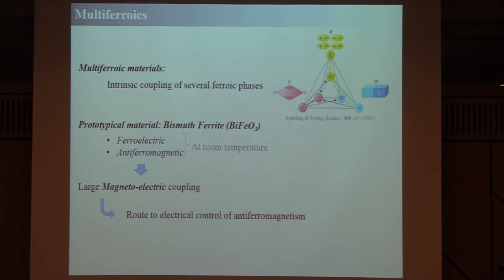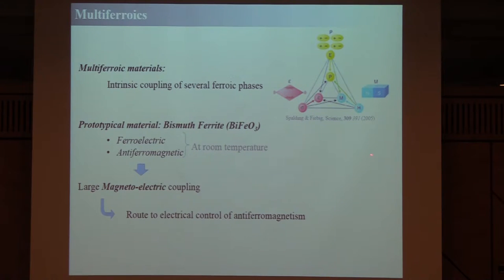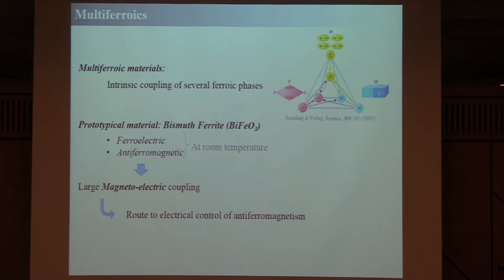The multiferroic I'm going to use is bismuth ferrite — the prototypical multiferroic — because it's the only one working at room temperature. In multiferroics, the idea is to have, for example, a polarization and a magnetization, and have them coupled. If your electrical polarization is linked to your magnetization, then you can write a memory state electrically and read it magnetically, which is the best compromise. So the idea is: get a material with two coupled order parameters, and play with one to influence the other.